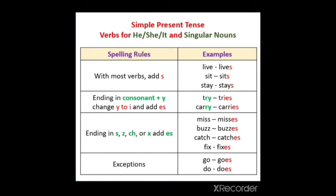Let us see what are the s and es forms and how we can prepare them from the verb. Live — lives. Sit — sits. Stay — stays. These are the s form of the verb. Try — tries. Carry — carries. These are the es form of the verb.